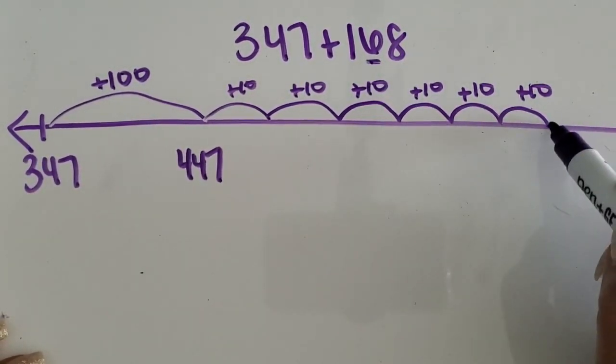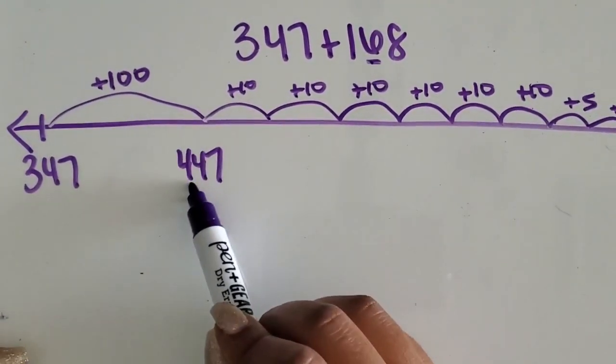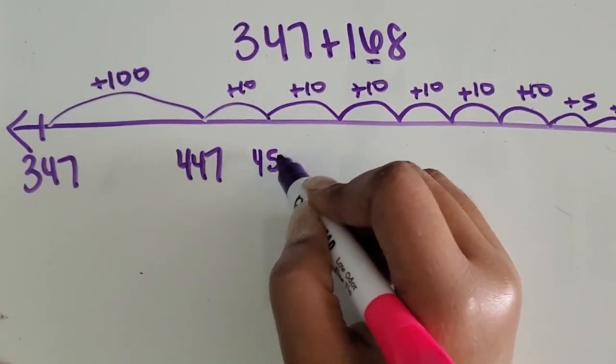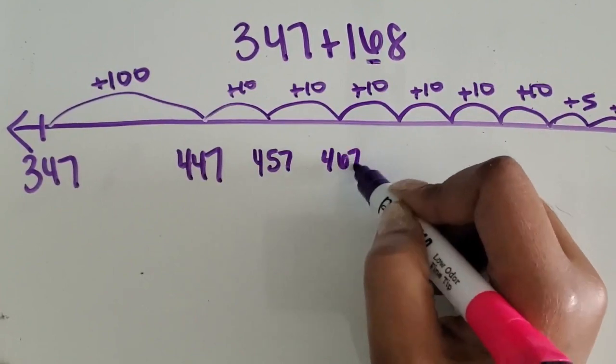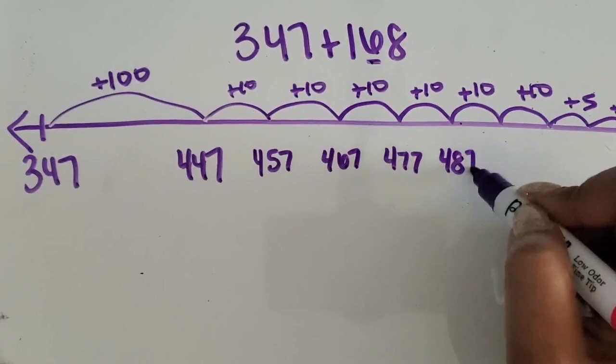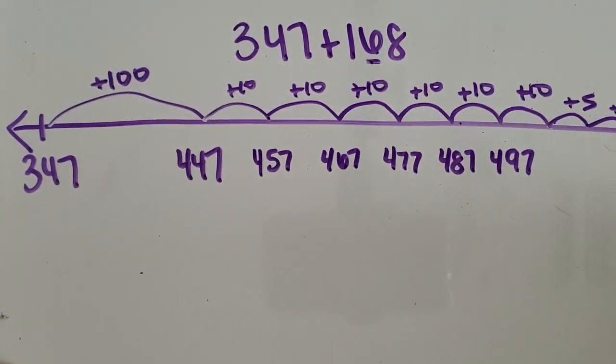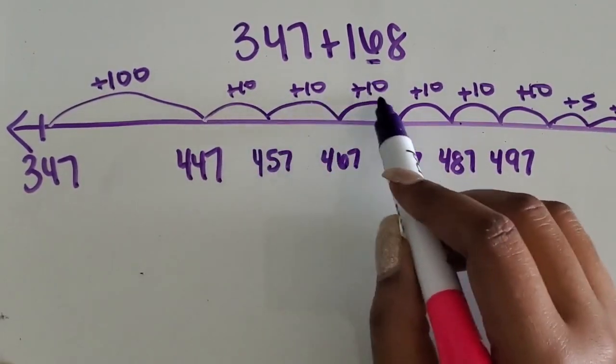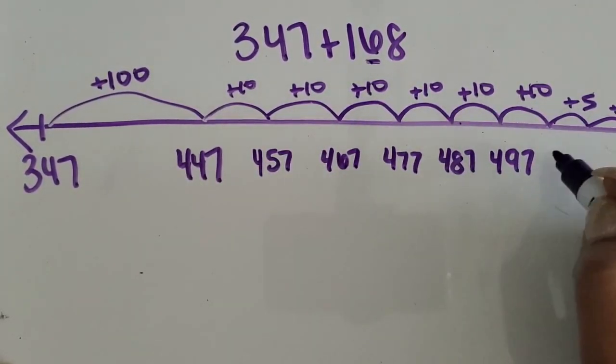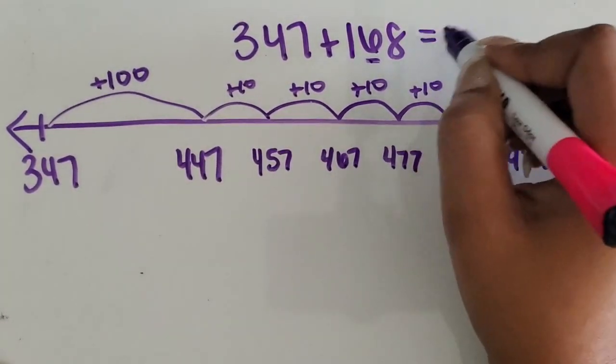And then adding the eight ones. You can add eight individual ones. I like to do the 5 and the 3. So 447 plus 10 is 457, 10 more is 467, 10 more is 477, 10 more is 487, 10 more is 497, and then this 10 gives us 507. 507 plus 5 is 512, plus 3 is 515. So that is the sum.